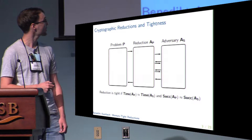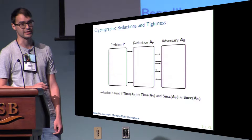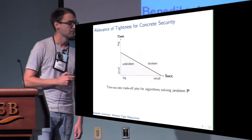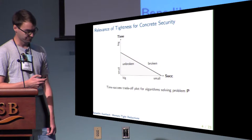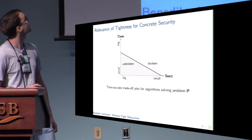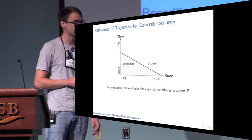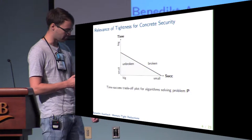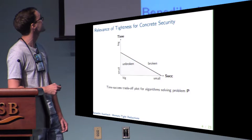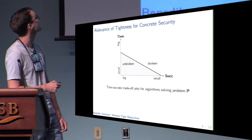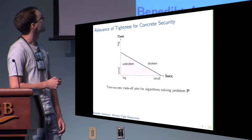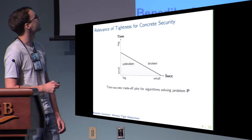What we usually compare are both running time and success probability. If both time and success probability essentially stay the same, we say that the reduction is tight. To see why tightness matters for giving concrete security guarantees, we look at the time-success probability trade-off plot for our problem P. The plot has two axes indicating success probability and running time, and is divided into two areas labeled as unbroken and broken.